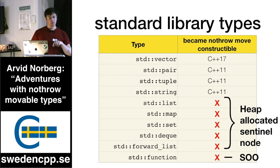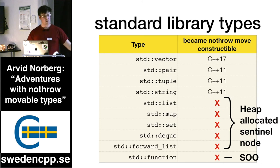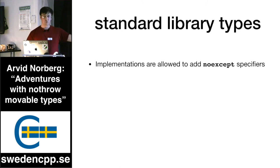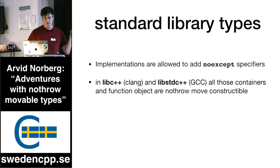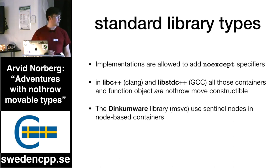With the traditional implementation of `std::function` where you don't use small object optimization and you heap-allocate the callable, you can just move it by moving the pointer. In fact, both libc++ (Clang) and libstdc++ (GCC) actually make it nothrow move constructible, because implementations are allowed to add `noexcept` specifiers where the standard doesn't require them. So all those red crosses in GCC and Clang are actually green check marks. Notably, Dinkumware — the Visual Studio library — still has red crosses, because they use sentinel nodes in their node-based containers.